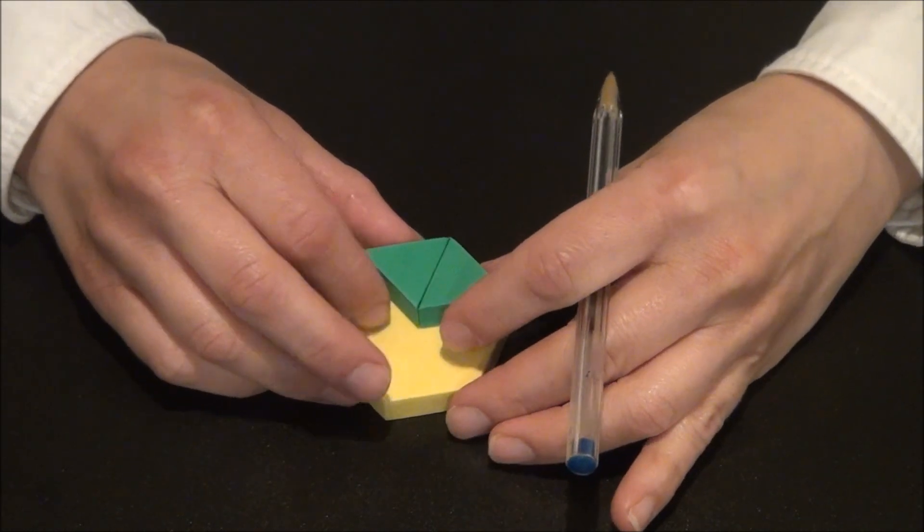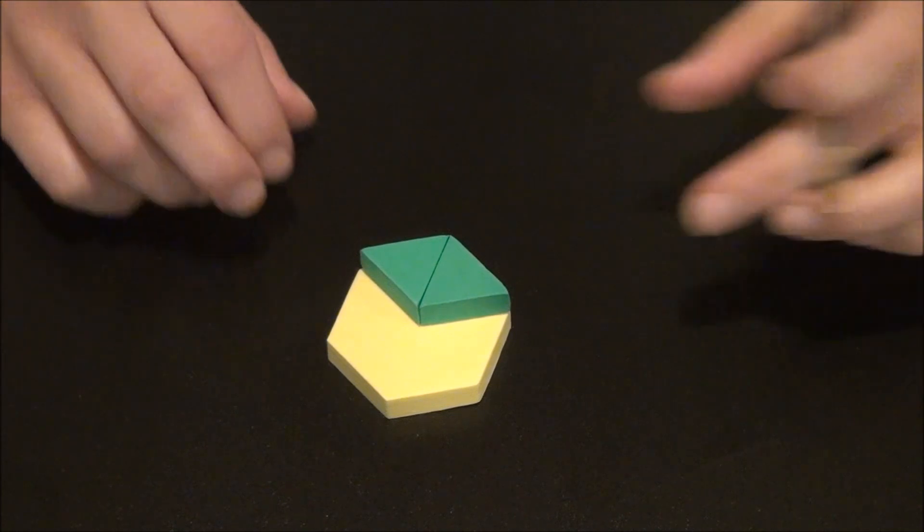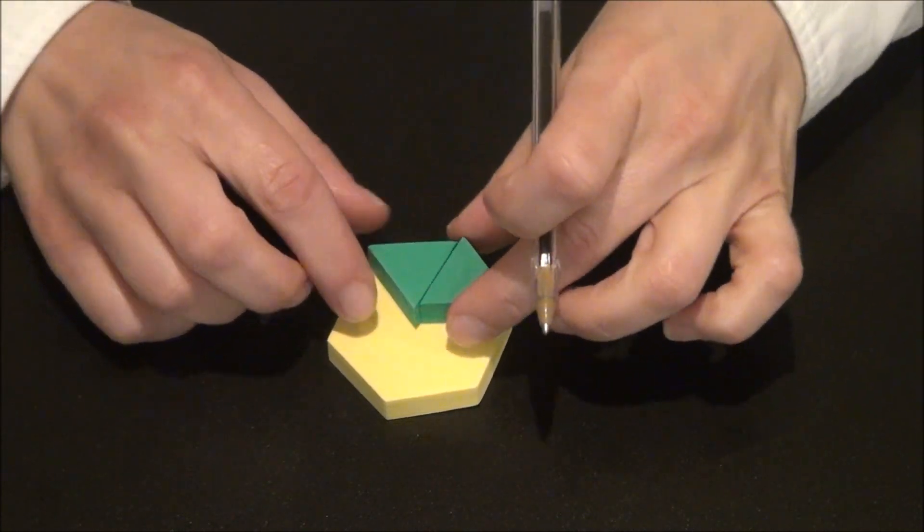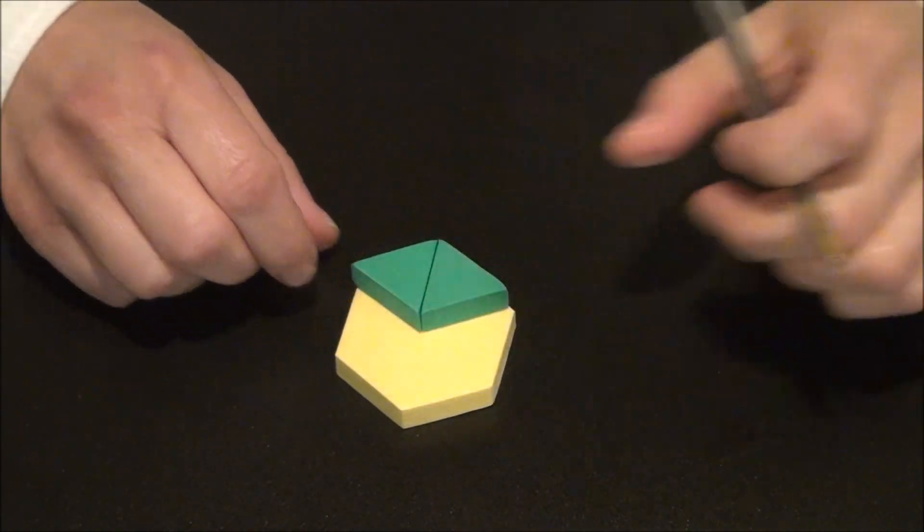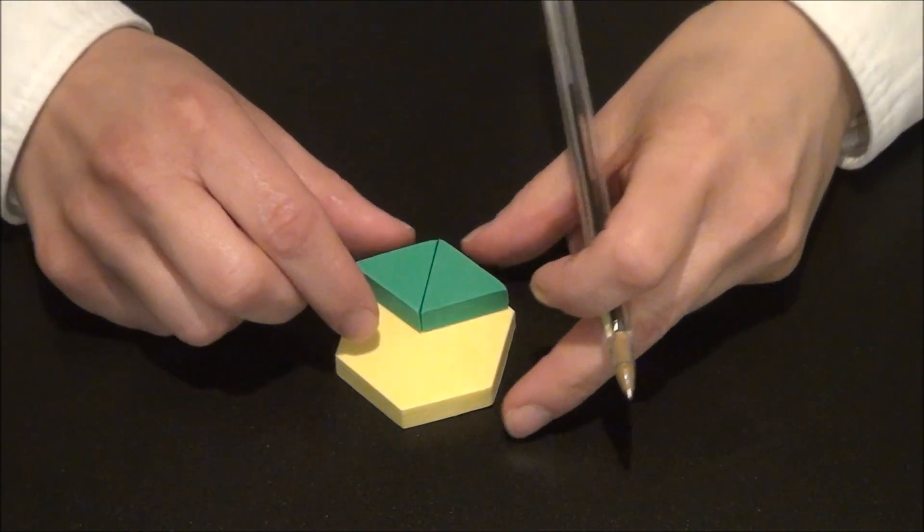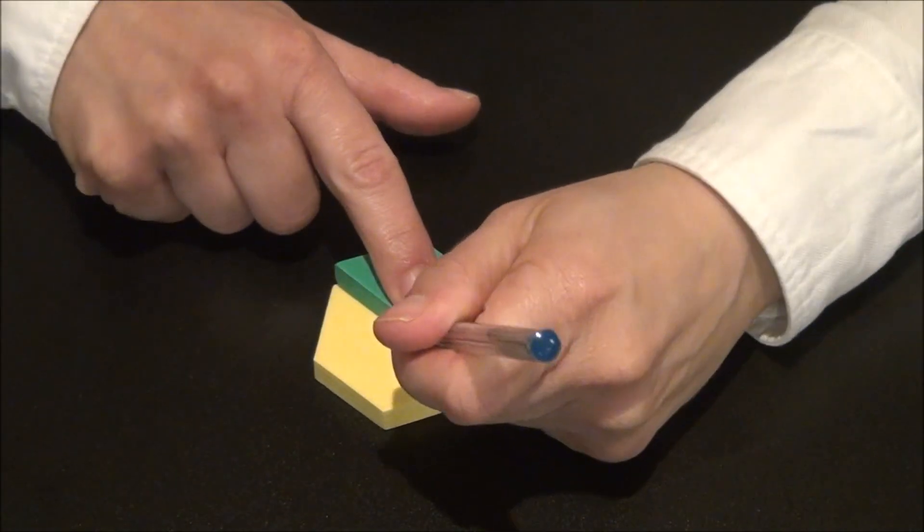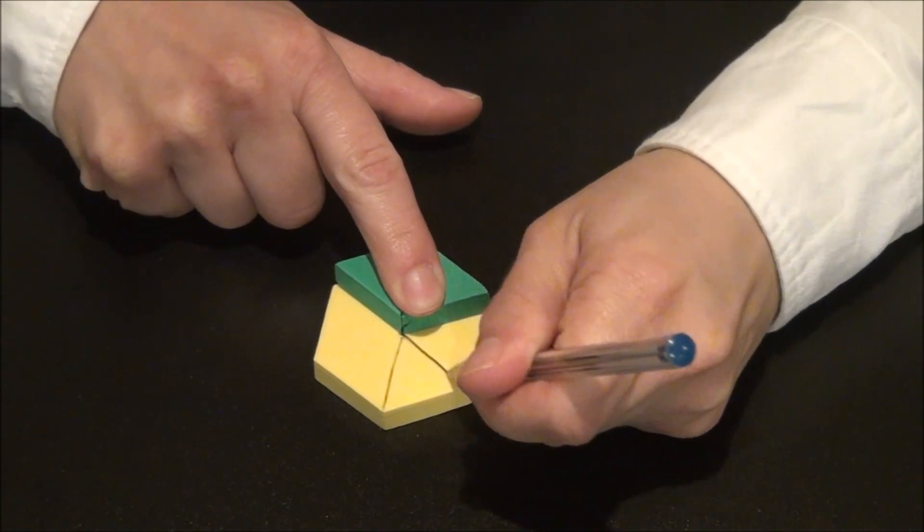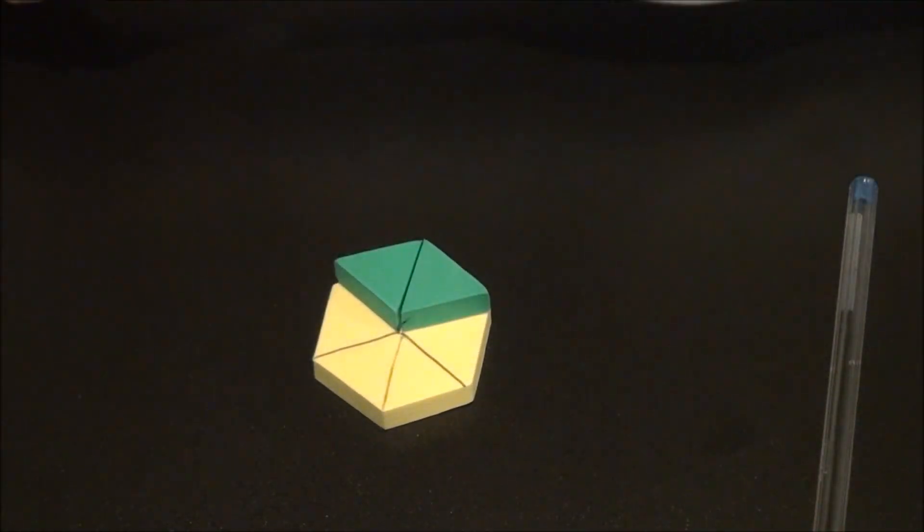So for example, it might rearrange the shape like this to make it easier to see. And then I could just say, oh, well, let's see how many times I can cover that hexagon. Oh, well, that's one third. Or it might actually change the shape, making it easier for me to see that fraction.